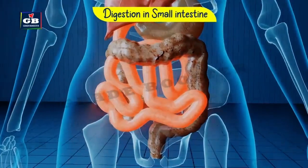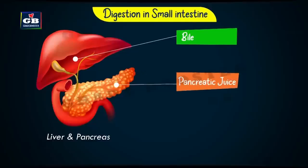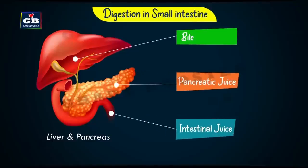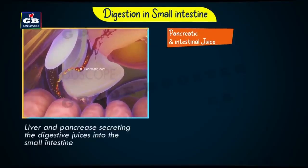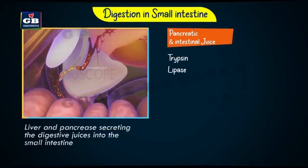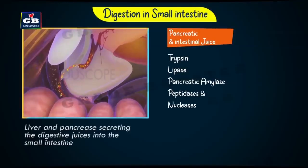The small intestine is highly coiled to fit in less space. The pancreas secretes pancreatic juice, intestinal glands secrete intestinal juice, and the liver secretes bile juice into the small intestine. Pancreatic juice and intestinal juice have enzymes like trypsin, lipase, pancreatic amylase, peptidases, and nucleases, which help in the digestion of carbohydrates, fats, and proteins.